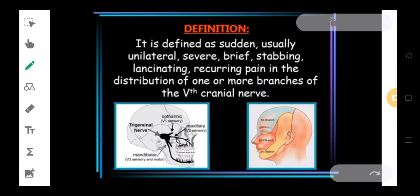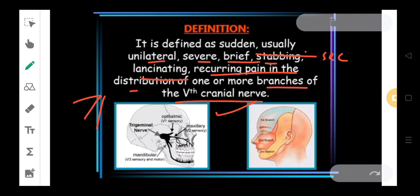Moving ahead, if we see the proper definition, it is defined as sudden, usually unilateral, that means on one side of the face, severe, brief, that is the duration is going to be very less for just some seconds, and stabbing, lancinating, recurring pain in the distribution of one or more branches of the 5th cranial nerve. This particular nerve has 3 branches: the ophthalmic branch, maxillary and the mandibular branch. When one or more branches are experiencing pain and there is recurring pain in the branches of this nerve, that is said to be trigeminal neuralgia.